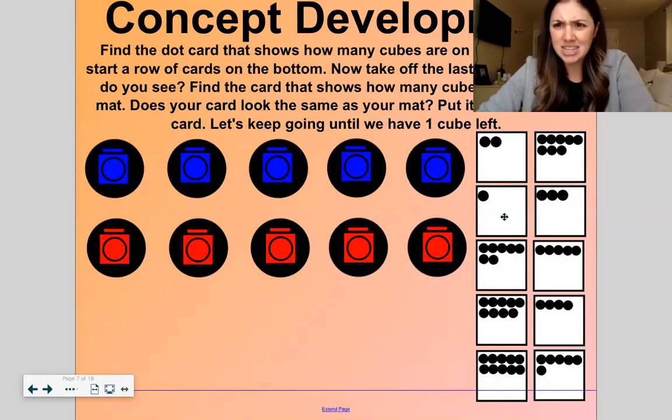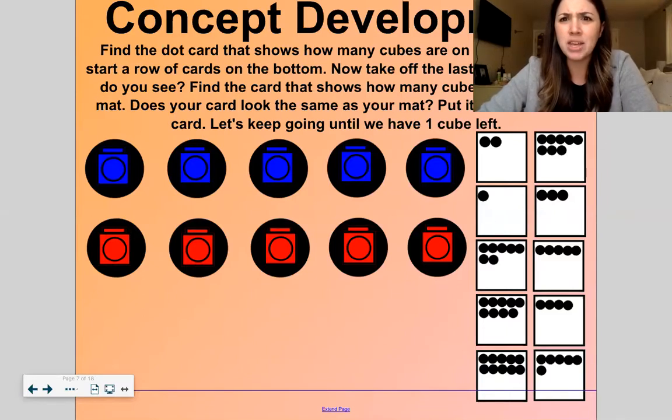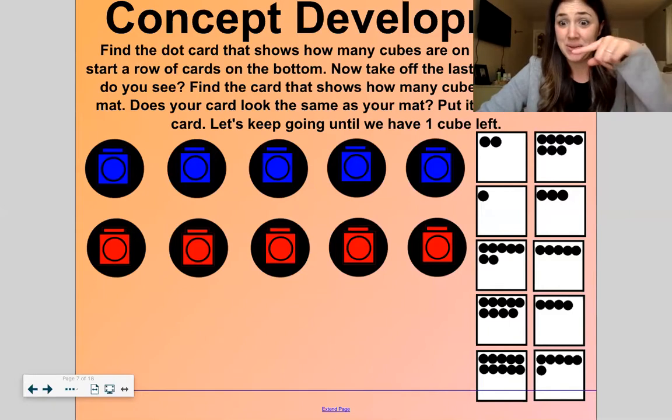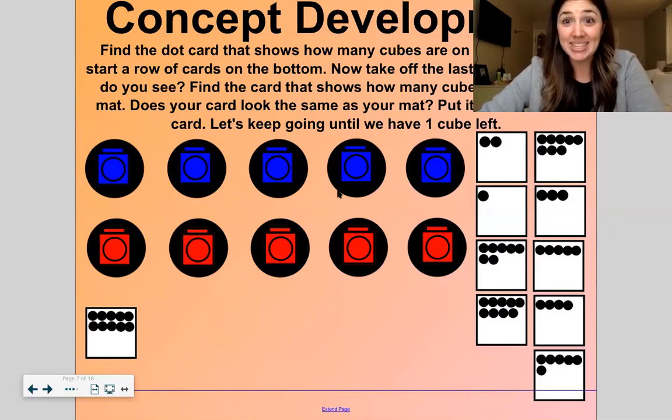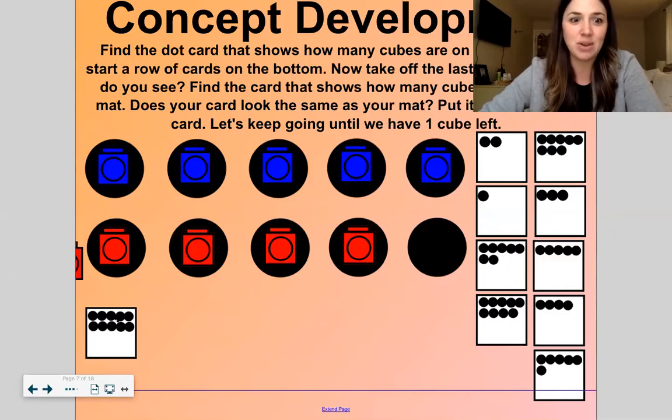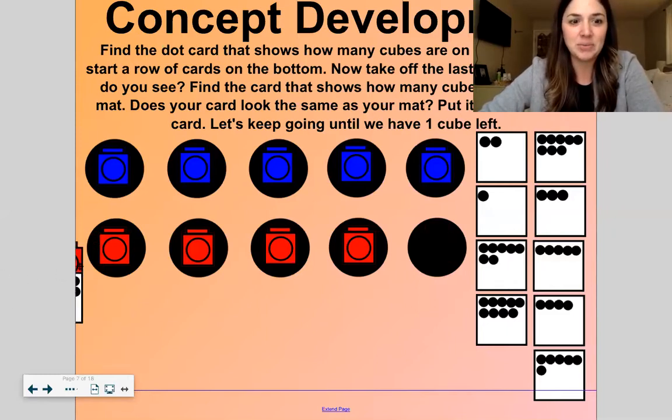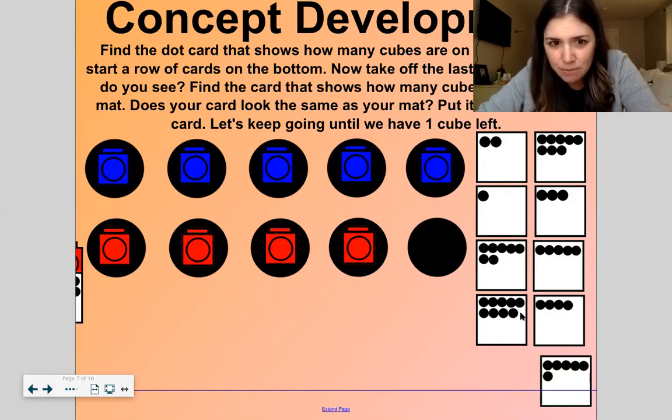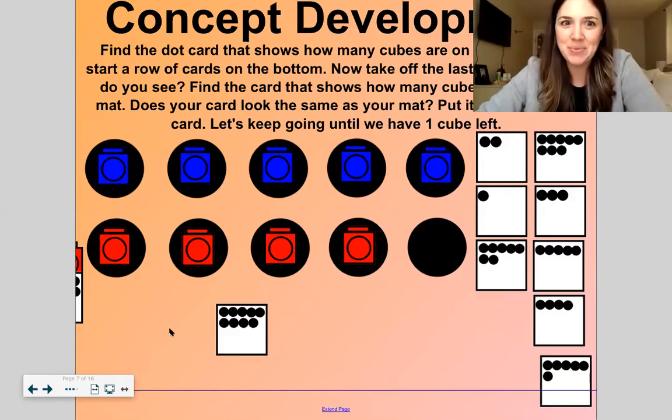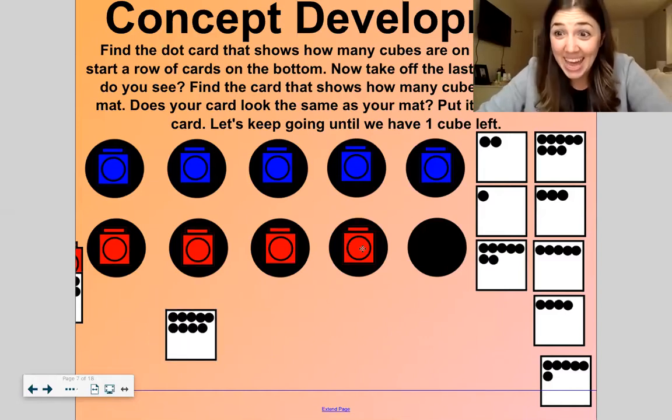Okay, now find the dot card down here that shows how many cubes are on my mat. Yeah, it's right here. Now, what do you notice? It looks the same, right? Five on top, five on the bottom. Five on top, five on the bottom. Okay, now let's take off this last red cube and we'll kind of throw that one away too. Now, let's find the card that shows how many cubes are on the mat. Hmm, what if it's not that one? Yeah, five on top, four on the bottom. Five on top, four on the bottom. Yep, there we go. Does it look the same as our mat? Yeah, it does.